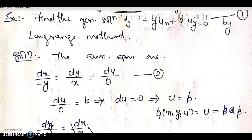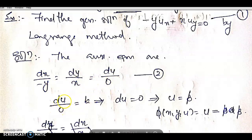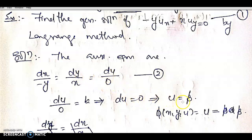From dx/(-y) = dy/x = du/0, we take du = 0, which implies u = constant. Therefore u = β, giving us the first integral φ(x,y,u) = u = β.